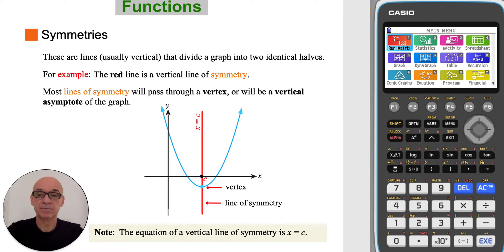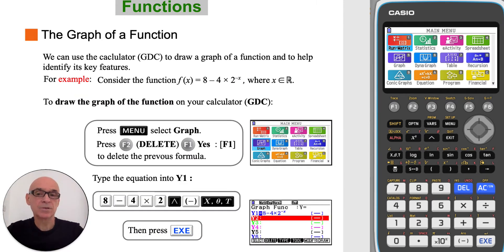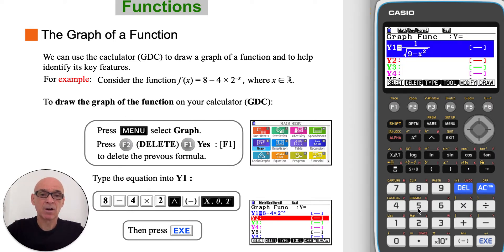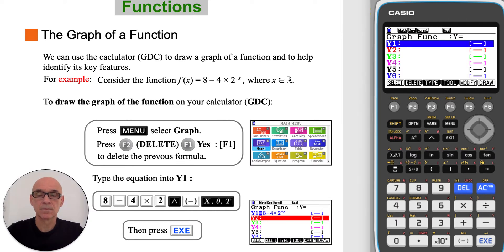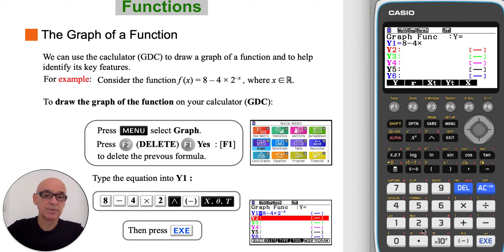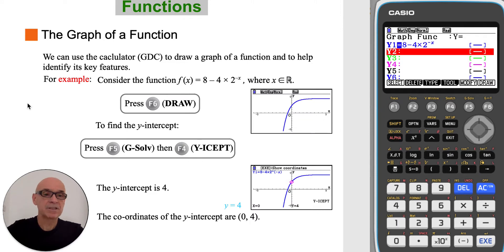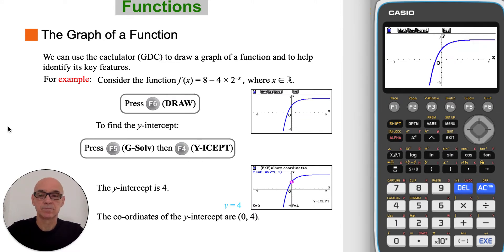We can use the calculator to draw a graph of the function to help identify its key features. From the main menu select Graph, then press F2 followed by F1 to delete any previous equation. Type in the equation into Y1: that's 8 subtract 4 times 2 to the power of negative x, pressing the x variable button and pressing Execute to enter the equation. Press F6 to draw the graph.